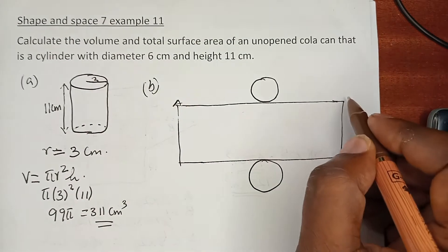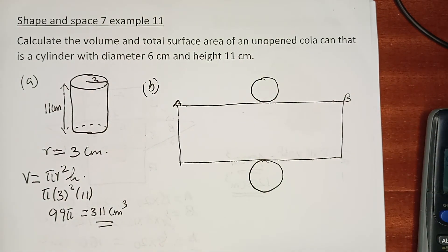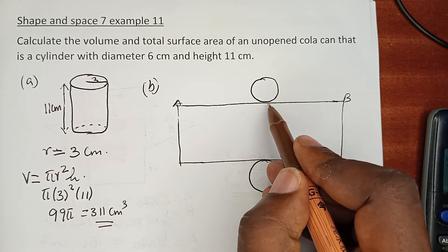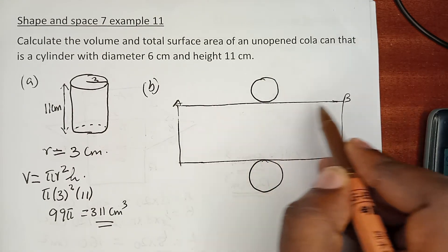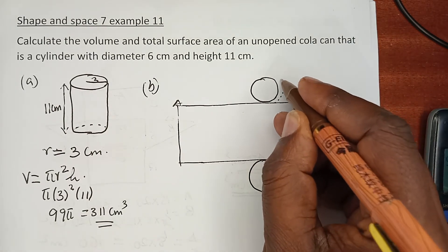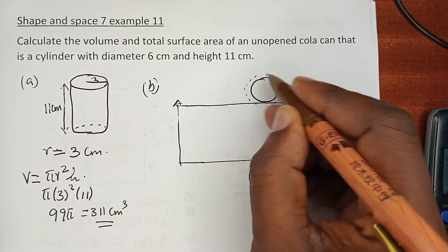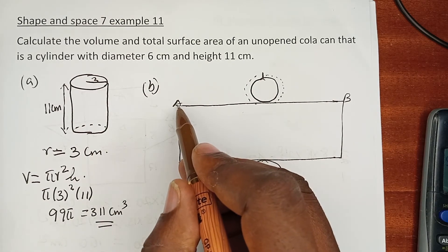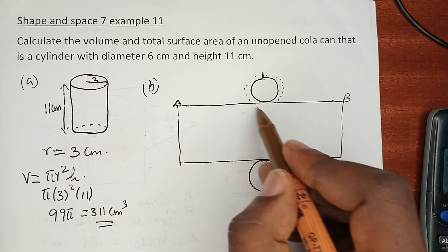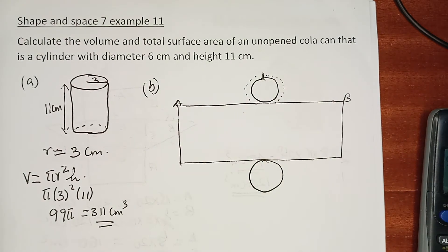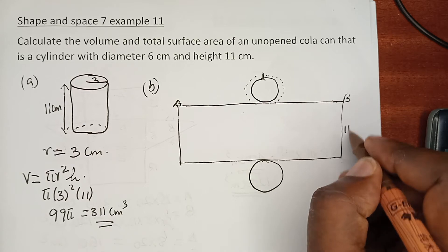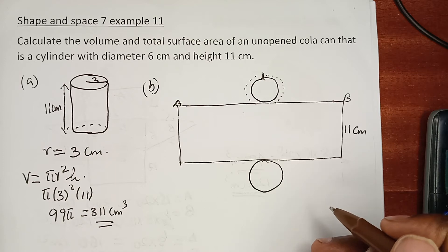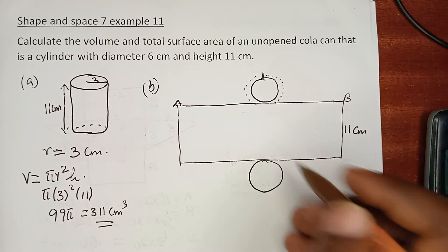The length of the rectangle from point A to point B is actually the circumference of the circle. If you fold side B along one edge and side A along the other, they will meet and return to form the circle. So the length AB equals the circumference of the circle. The height of the rectangle remains 11 cm, and AB times 11 gives the area of the rectangle.